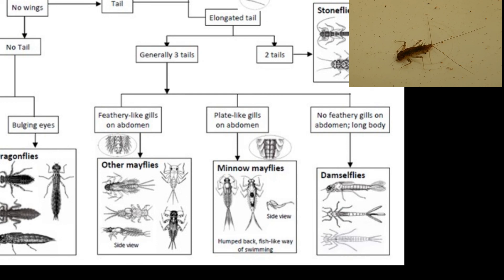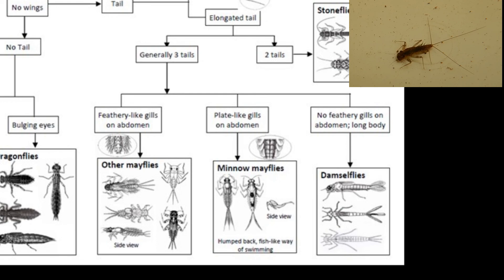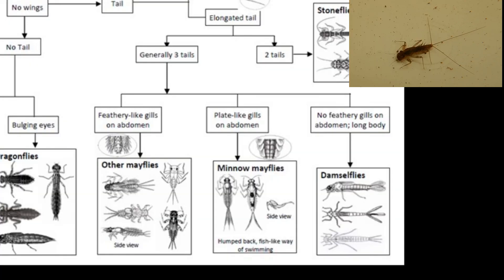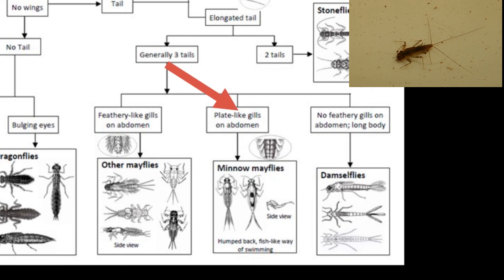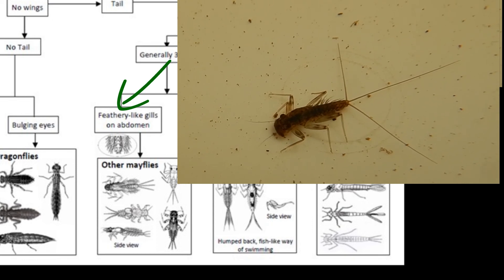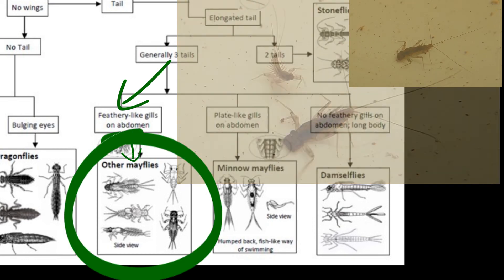Lastly, we have three choices, all relating to the presence or absence of external gills on the invertebrate's last body segment, the abdomen. If there are no gills present, we are looking at a damselfly. If there are plate-like gills present, we have a minnow mayfly. We, however, have feathery gills present — notice how this little one breathes. So, we are looking at the other mayflies group.